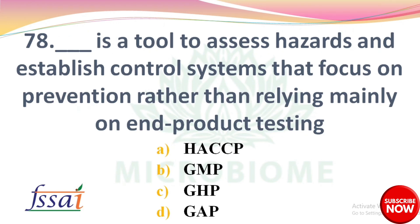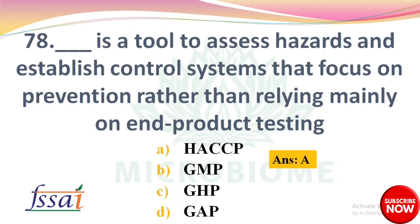DASH is a tool to assess the hazards and establish control systems that focus on prevention rather than relying mainly on end-product testing. Options: A) HACCP, B) GMP, C) GHP, D) GAP. The right answer is option A: HACCP.